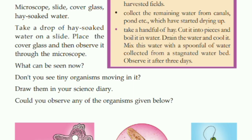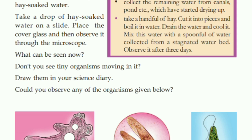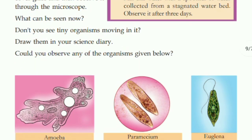Take a drop of hay-soaked water on a slide. Place the cover glass on it and observe it under the microscope. There are many organisms that grow in it. Some examples of those organisms are amoeba, paramecium, and euglena. These are very small microorganisms.